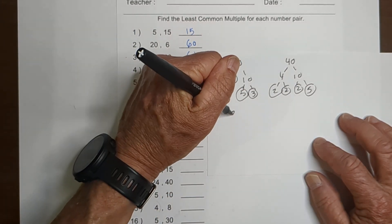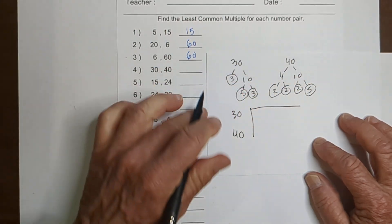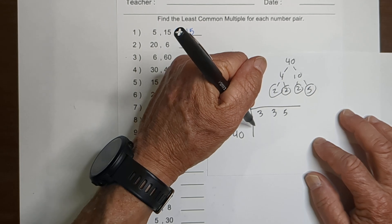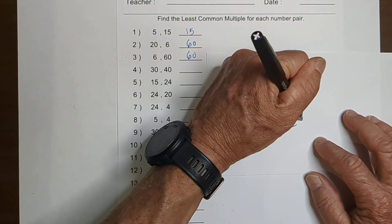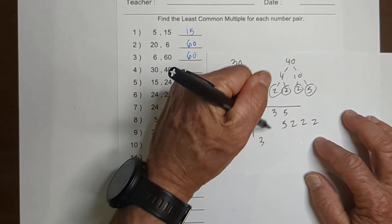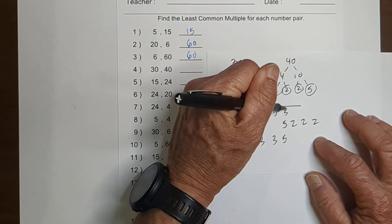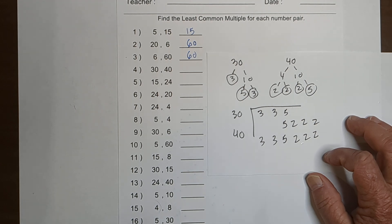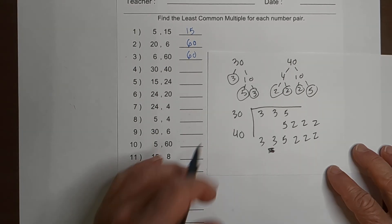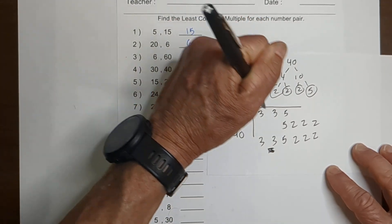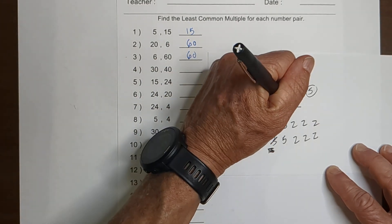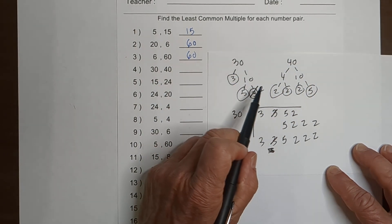Now what I do is I make a chart and place the numbers in it. For 30 we've got 3, 3, 5. And then for 40 we've got 2, 2, 2, 2, and 5. Wait — before I move on, I see a mistake here. This should be a 2. Let's get rid of those and add a 2 there, sorry for the mistake — because 5 times 2 is 10.